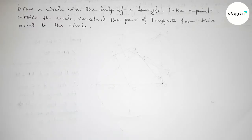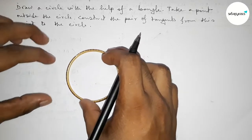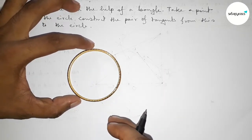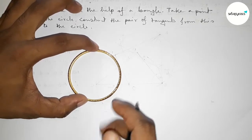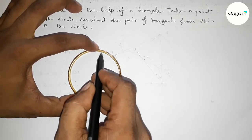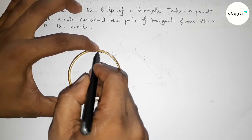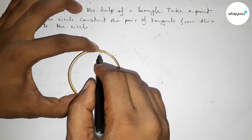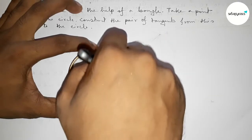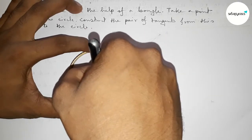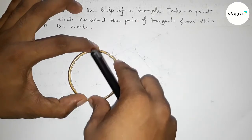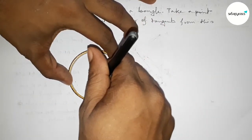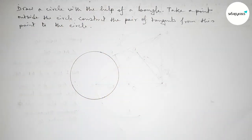First we have to draw the circle with the help of a compass. Taking the compass here and drawing a circle by this way.